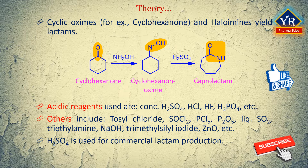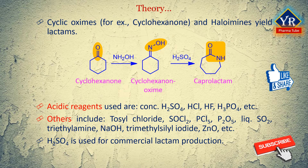Sulfuric acid is the most commonly used acid for commercial lactam production due to its formation of an ammonium sulfate by-product when neutralized with ammonia. Ammonium sulfate is a common agricultural fertilizer providing nitrogen and sulfur.